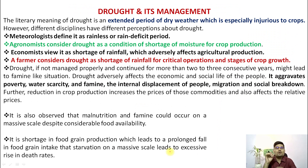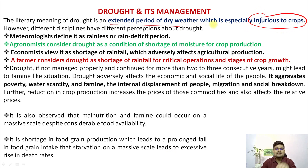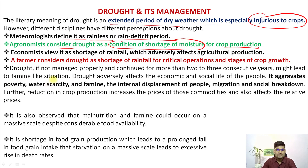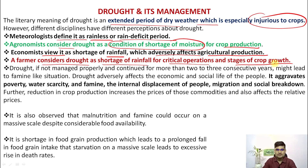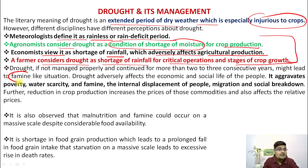Looking into drought and its management — drought literally means an extended period of dry weather conditions which is injurious to crops. Meteorologists define it as a rainless or rain-deficient period. Agronomists consider it as a shortage of moisture for crop production. Economists view it as shortage of rainfall adversely affecting agricultural production. Farmers consider it as shortage of rainfall during critical operations and stages of crop growth. If not managed and continuing over consecutive years, drought creates a situation of famine.